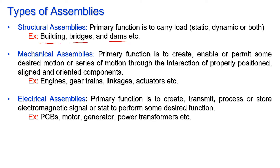Structural assemblies include buildings, bridges, and dams. In buildings, different types of bricks and joining materials like cement, crush, and iron bars are used to form a composite material. In bridges, steel structures and roads come together to form the structure. In dams, the assembly is similar. The primary function of structural assemblies is to carry loads — static, dynamic, or both. In buildings the load is mostly static; in bridges it is both static and dynamic.